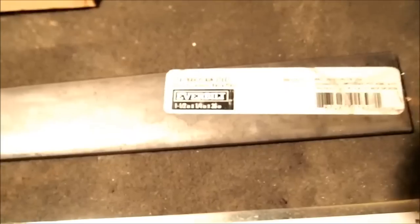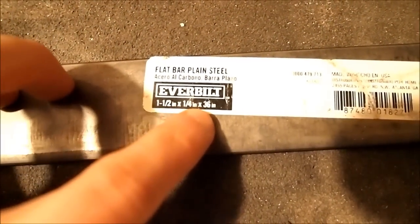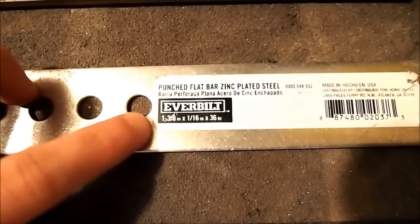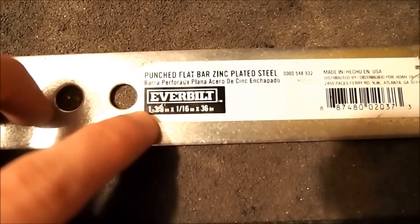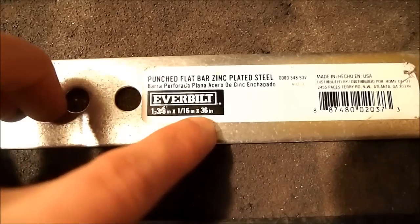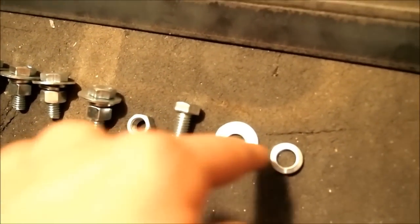So here's what you need to make this one. A steel flat bar, one and a half by one quarter by 36 inch. One of these zinc-plated steel flat bars with the holes punched out of it, one and three eighths by one sixteenth by 36 inch. And then an angle iron, one and a quarter by one eighth by 36. I wasn't sure how many sets I would need so I got 14 sets of nuts, bolts, washers, and lock washers. They're three eighths inch.